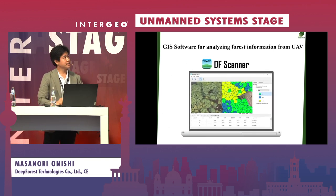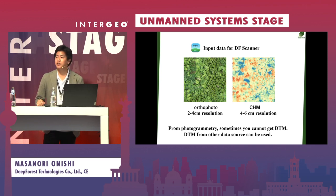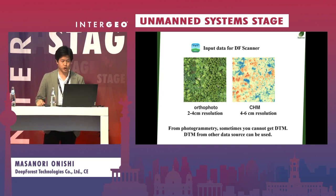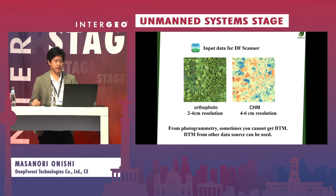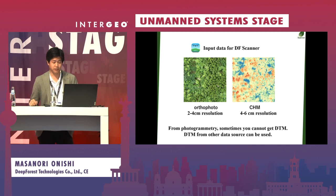The next software is DF Scanner, a GIS software for analyzing forest information from UAVs. DF Scanner needs two input datasets: one is aerial photo at around 2 to 4-centimeter resolution, and the other is CHM, Canopy Height Model, at around 4 to 6-centimeter resolution. If you cannot get a Digital Terrain Model from photogrammetry, you can use DTM from other sources — for example, in Japan there is open airborne DTM data at 5-meter resolution, which is sufficient quality for calculating forest information.